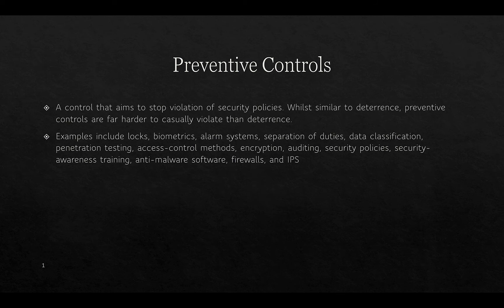Preventive controls aim to stop violation of security policies. While similar to deterrence, preventive controls are far harder to casually violate. Examples include locks, biometrics, alarm systems, separation of duties, data classification, penetration testing, firewalls, IPS, and anti-malware software.